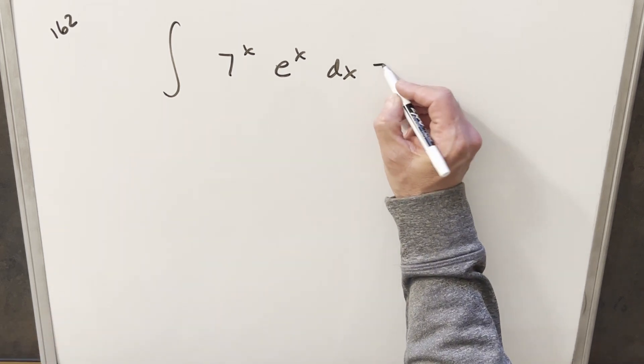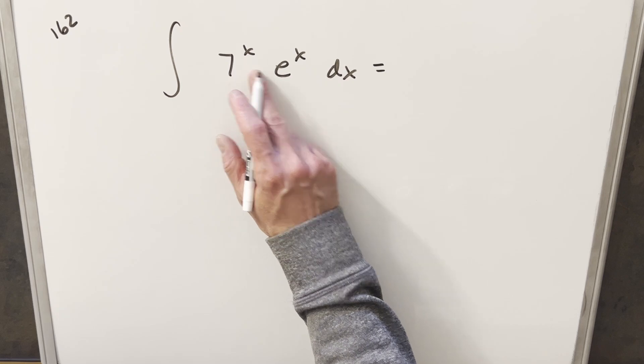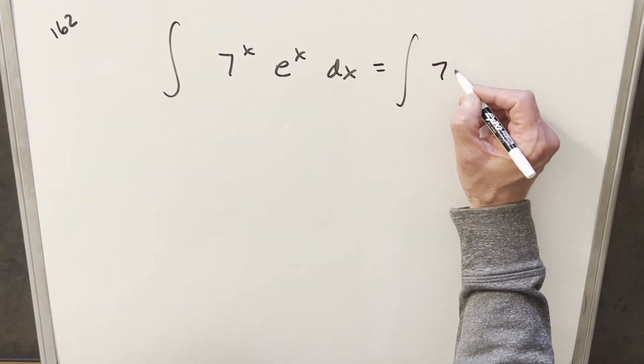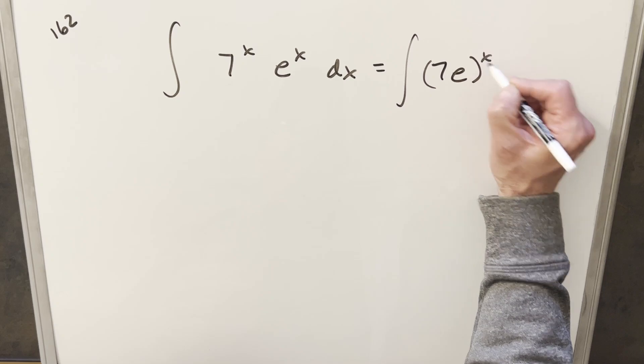We have the integral of 7 to the x times e to the x dx. To get started, it's a little unusual looking, but because we have the same exponent on the 7 and the e, we can multiply those together and write this as 7e all to the x.